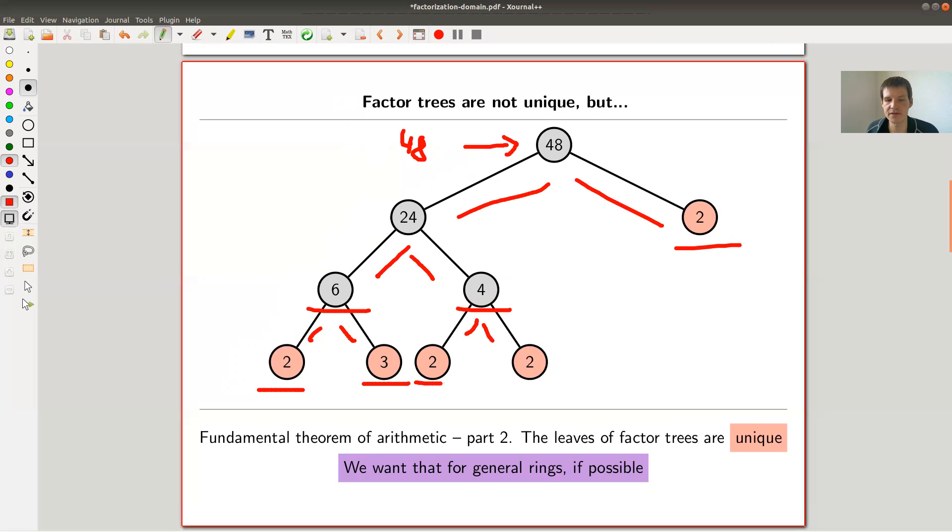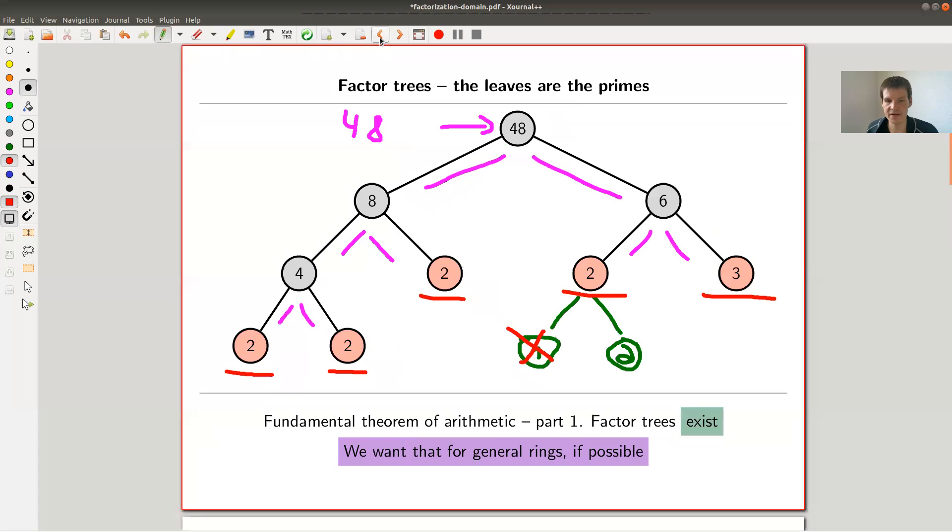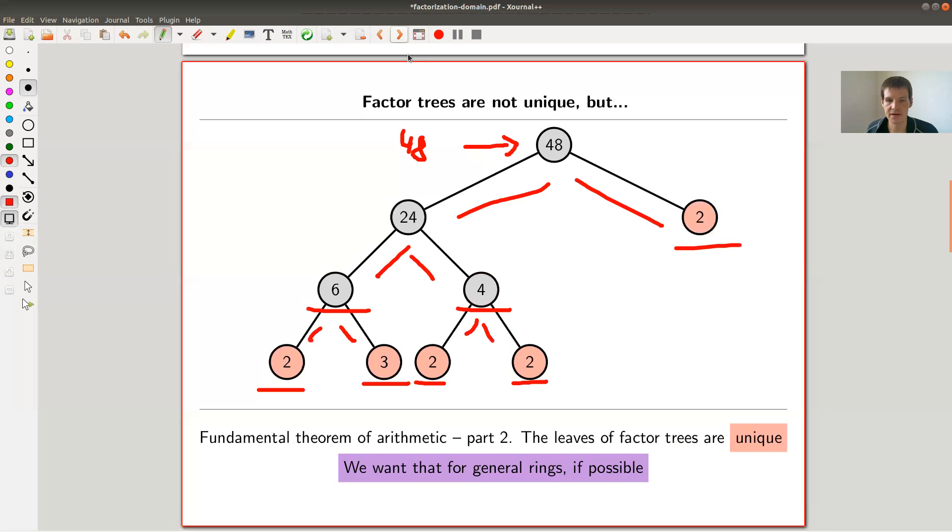And I got 2 times 3 times 2 times 2 times 2. So let me go back. Here I got 2 times 2 times 2 times 3. So 2 to the 4 times 3. That's what I got here. And here I also got 2 to the 4 times 3, but in a kind of different order. 2 times 3 times 2 cubed.